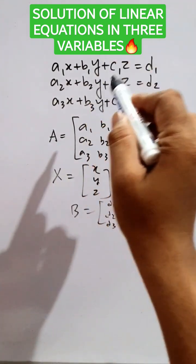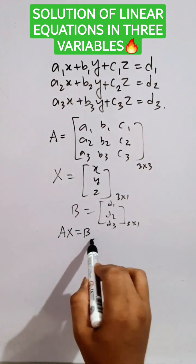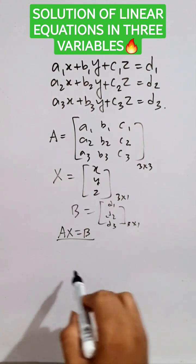Now, if we want to solve these equations, we have to write the matrix equation of the given simultaneous equations as A times X equals B.